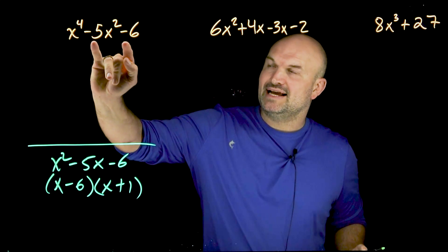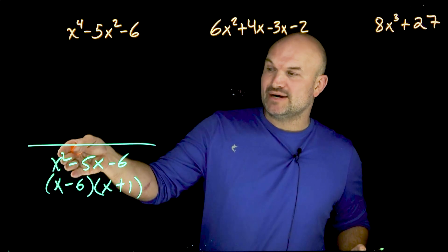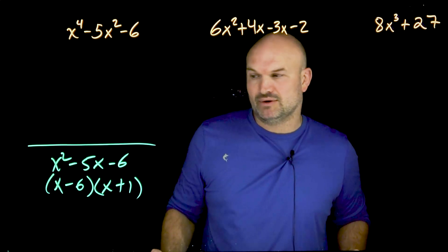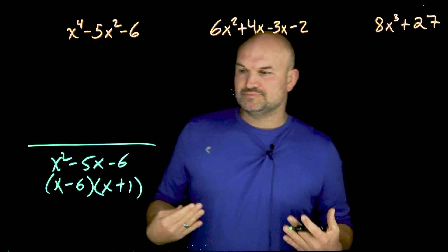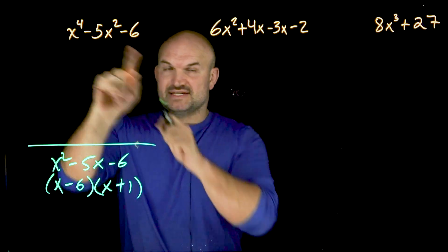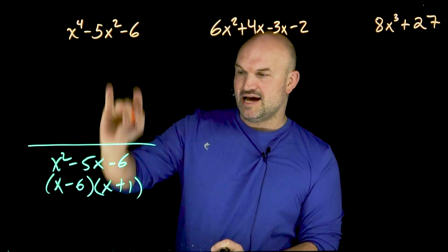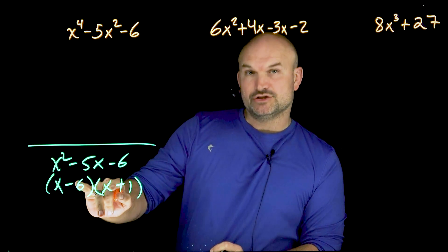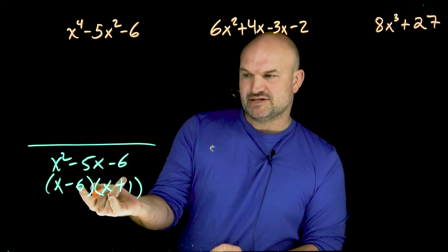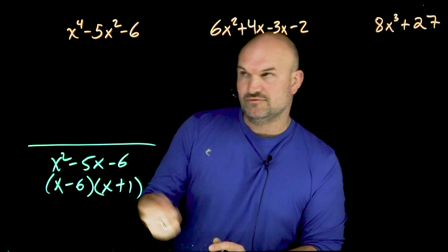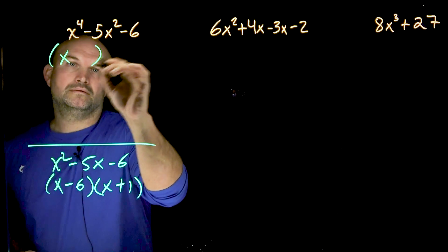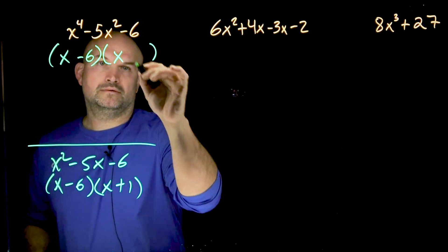So when we look at a trinomial that's not raised to the second power, but raised to a higher power, what we simply need to do is think about, well, I still need to achieve the negative six and the negative five, right? So having my trinomial separating the two binomials makes sense, especially with keeping the negative six and the positive one.